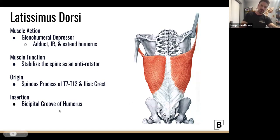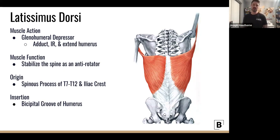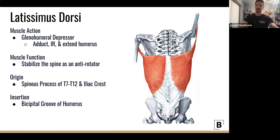The lat also attaches along the rib cage — T7 through T12. The thoracic spine's main job is to create most rotation, while the lumbar can't. The lat connects into almost all the thoracic vertebrae, so its function is to prevent over-rotation when it's not supposed to happen. It also connects into the iliac crest, which is why it stabilizes the pelvis.